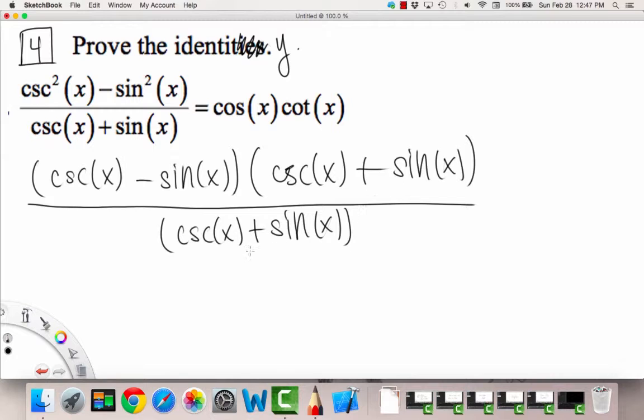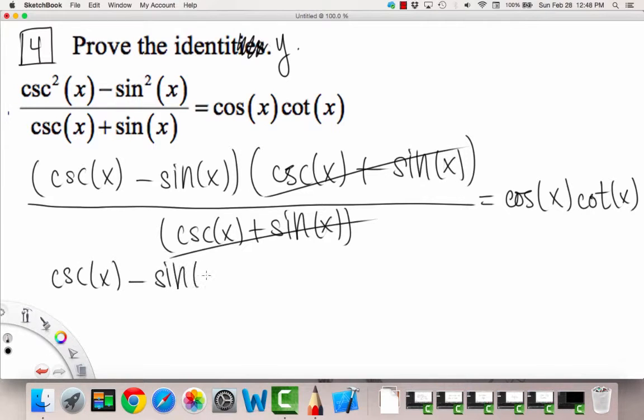And on the bottom we have this cosecant x plus sine x, which can conveniently cancel with one of that, one of the factors on top. And on the right side we still have this cosine x times cotangent of x. So now on the left we have cosecant x minus sine x, and then is equal to cosine x cotangent x.